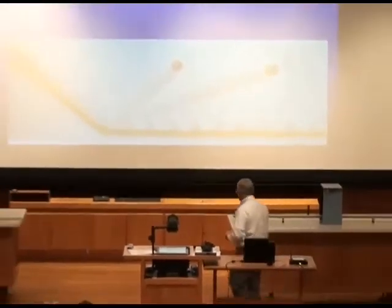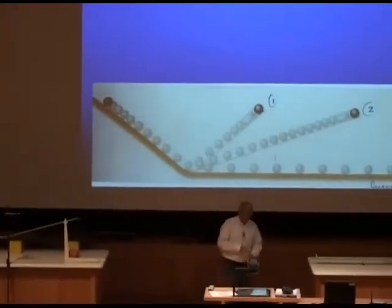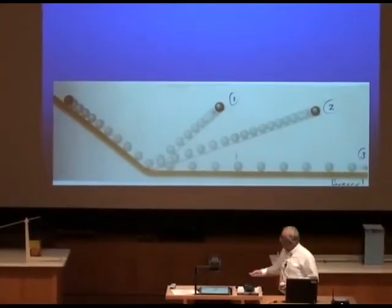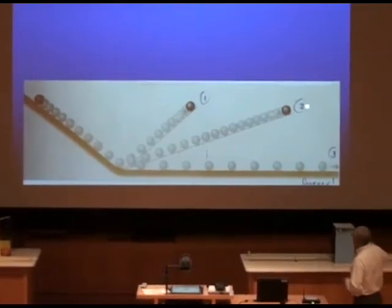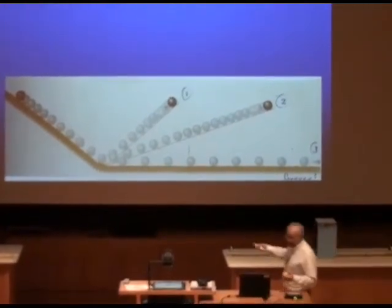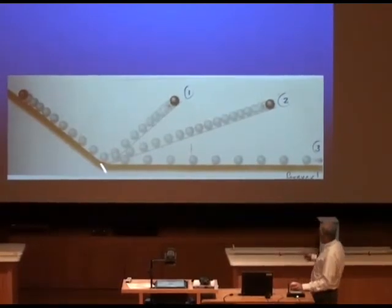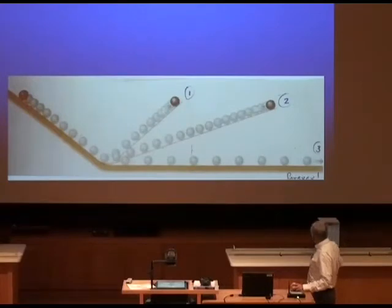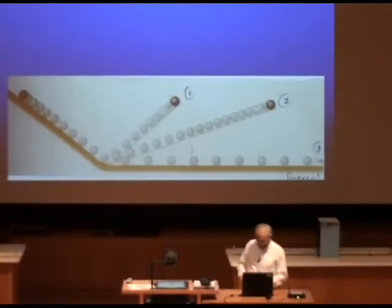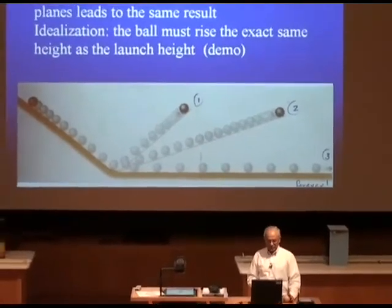So now comes this, again, leap of thought extrapolation. If I make the incline completely flat, then the object will have to go infinitely far to get to this height. It will never get to that height. So there again is another derivation of the law, that once you launch an object at a certain speed, it will keep on going forever and ever, because it's trying to get back to this height, and it's not able to get back to this height. So that's the alternate derivation.